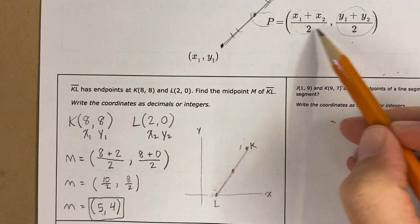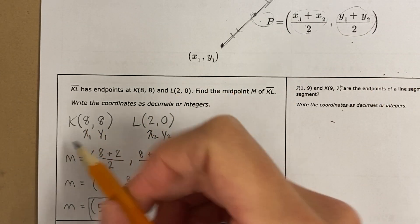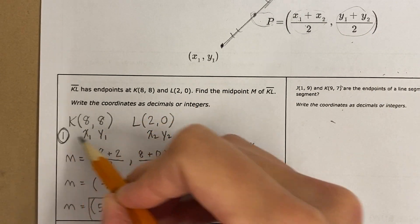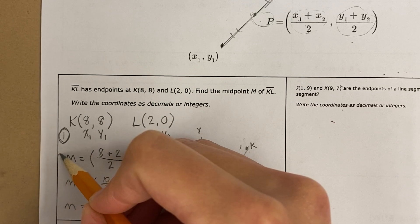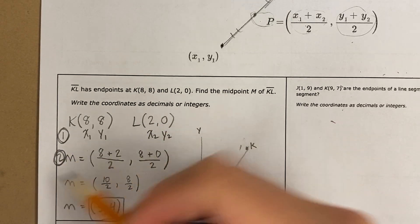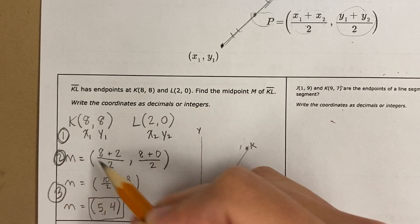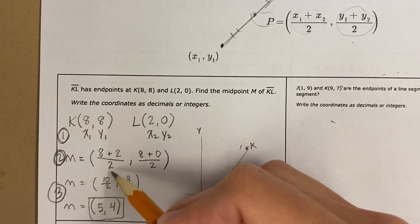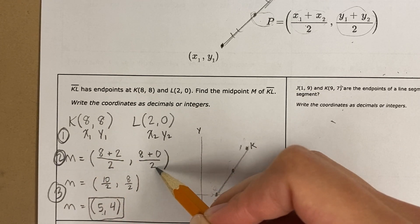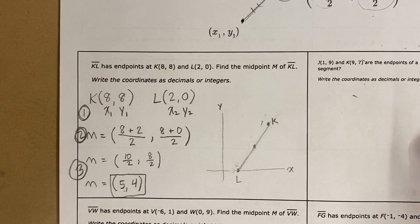But this is what it looks like, and you can use it every time. So you start step 1, label the points x1, y1, x2, y2. Step 2, plug the numbers in. And then step 3, just do the math. I just did 8 plus 2 divided by 2, 8 plus 0 divided by 2. Go ahead and try it.